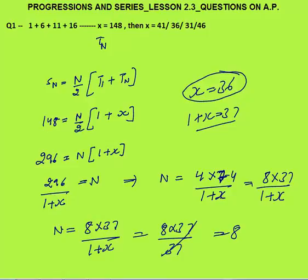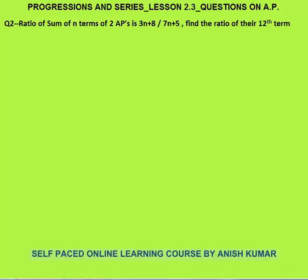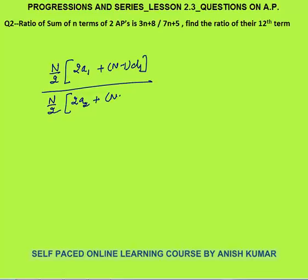Second question: the ratio of sum of first n terms of two APs is given. We need to find the ratio of their 12th terms. Sum of n terms is n by 2 times (2a1 plus n minus 1 times d1) for the first AP, and (2a2 plus n minus 1 times d2) for the second AP. The ratio of sums is given as (3n plus 8) divided by (7n plus 5). We need to calculate the ratio of their 12th terms.